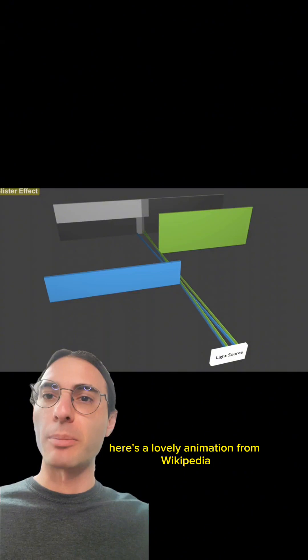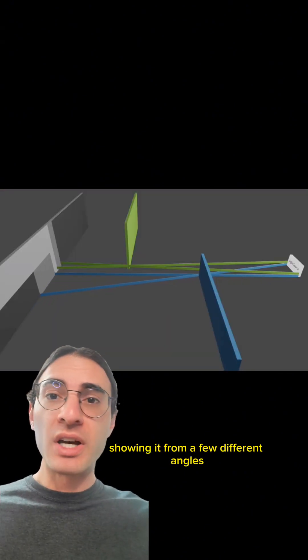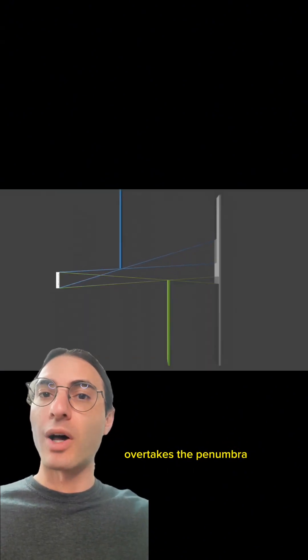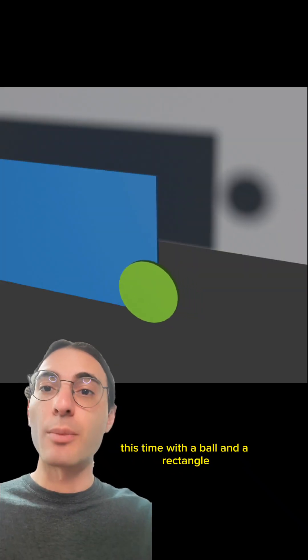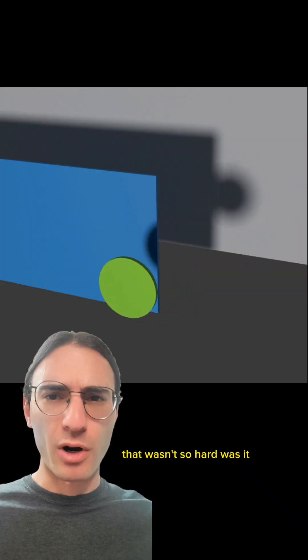Here's a lovely animation from Wikipedia, showing it from a few different angles. Notice how the umbra of the green rectangle overtakes the penumbra while the umbra of the blue rectangle doesn't change at all. And here's another gif of the same effect, this time with a ball and a rectangle. That wasn't so hard, was it?